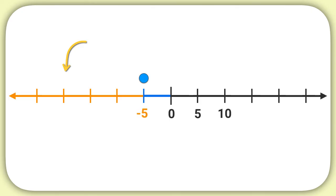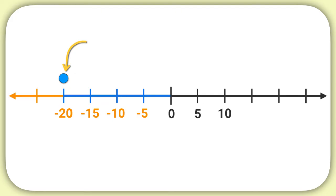Continue this on your own. What number is the arrow pointing at? Well, another dash would be negative 10, then negative 15, then negative 20. So we can see our arrow was pointing at the number negative 20.